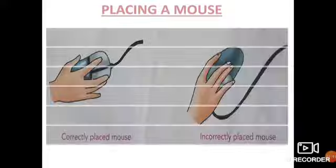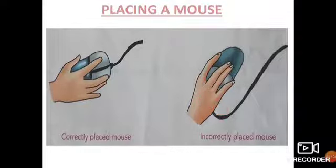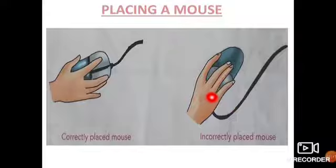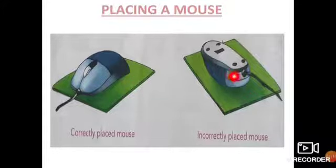Next we are going to learn about placing a mouse. You know what a mouse is and where it has to be kept, but how do we keep it? In the first picture, the mouse is correctly placed. In the second picture, it is wrongly placed — the connector and buttons should be opposite to your hand, not facing towards you. Also, always keep the mouse in the proper upright position, not inverted.